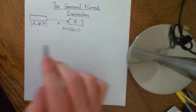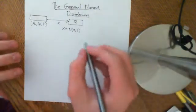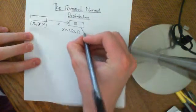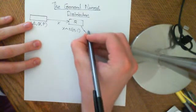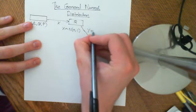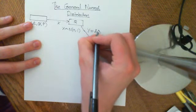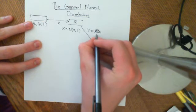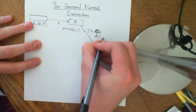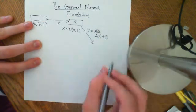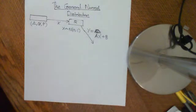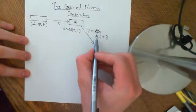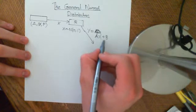Let's imagine taking functions of this random variable. Let's imagine setting up another random variable Y which is going to be a times X plus b. So the new random variable Y is a times X plus b.